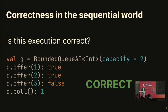The queue capacity is 2. We added the first element, we added the second element, and when we added the third element, we exceeded the queue capacity, so we cannot do that — this offer fails. And the last call extracts the first element, so we clearly see that this execution is correct.